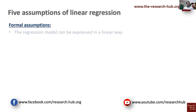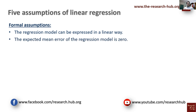The first assumption is that the regression model can be expressed in a linear way, and we can actually see this based on some scatter plots. The second assumption is that the expected mean error of the regression model is zero. There is no need to test for it because this is by default how the regression model works, but we can still verify that this assumption is met, as I will show shortly.